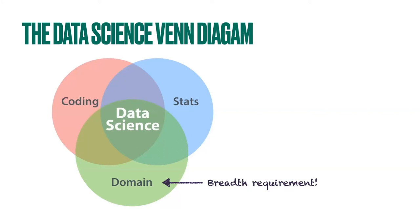So there you have it — prediction, description, and causal inference. Those are the core skills you get in a statistics and data science education. Now, getting a little closer to the curriculum, I like to show this data science Venn diagram because it emphasizes not just specific data sets or broad skills, but the actual mathematical and computational tools that you learn.